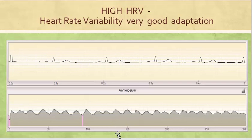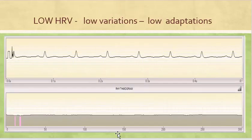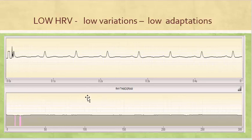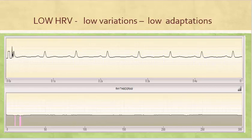How does heart rate variability look with not-so-good adaptation? Here is an example. When we look just at the electrocardiogram, we don't visually see these quick changes. This is why the computer helps us calculate all the RR intervals — it transfers them into the rhythmogram, and we see the rhythmogram is a flat line, showing low heart rate variability.